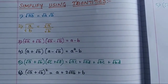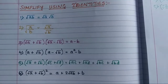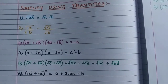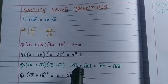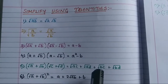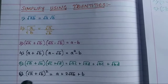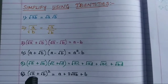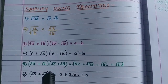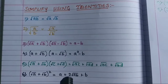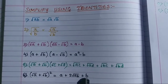The fifth identity is: root A plus root B, times root C plus root D, equals root AC plus root AD plus root BC plus root BD. The sixth one is: root A plus root B, whole square, equals A plus 2 root AB plus B.